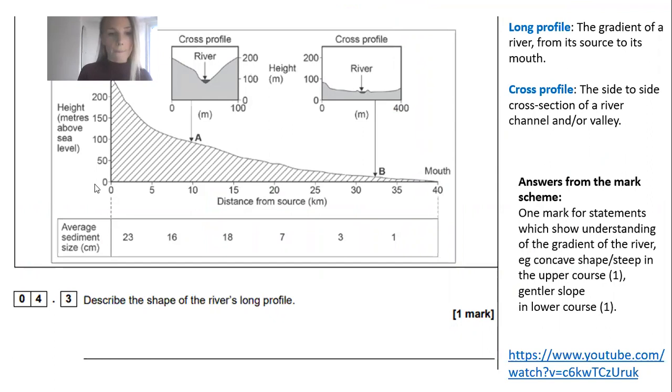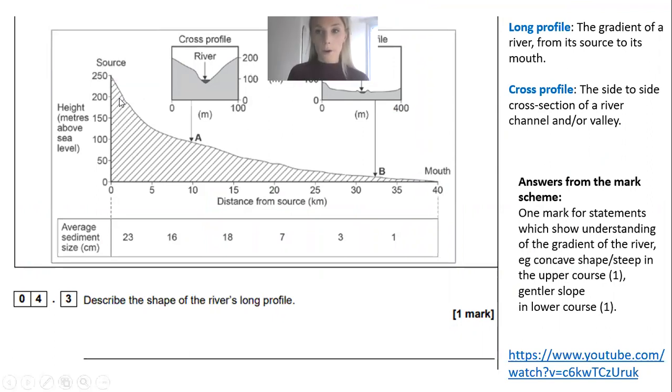The last question I'm going to go over is 4.3: describe the shape of the river's long profile. Students always get confused between these two terms—the long profile and the cross profile.